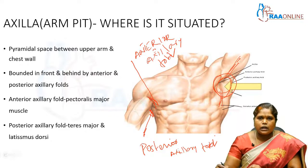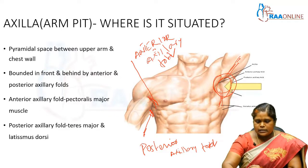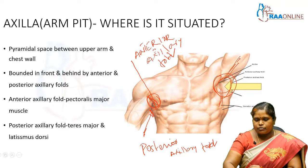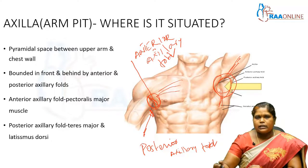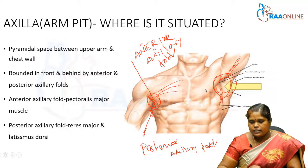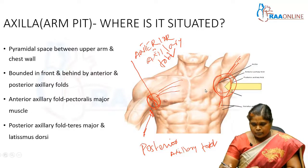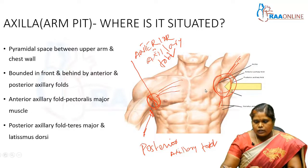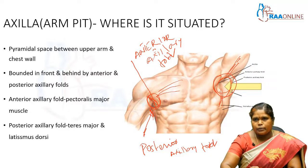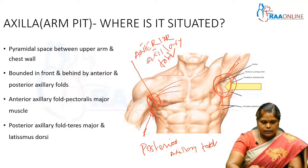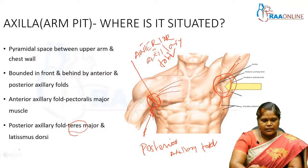These folds are formed by some muscles. This anterior axillary fold is formed by the large muscle that is the pectoralis major. The posterior axillary fold is formed by two muscles, namely the teres major muscle and the latissimus dorsi muscle.